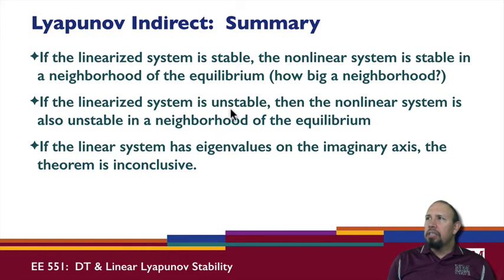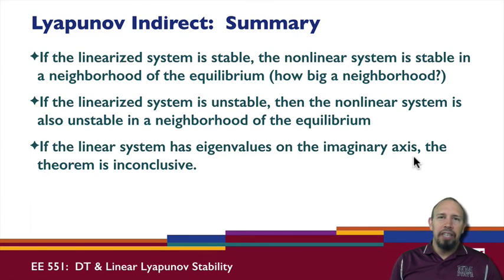If the linearized system is unstable, then the nonlinear system is also unstable in the neighborhood of the equilibrium. If the linear system has eigenvalues on the imaginary axis, then this theorem is inconclusive. It doesn't tell us one way or the other. So if our system is marginally stable, then we don't know if the nonlinear system is going to be marginally stable or not, or what even that means.